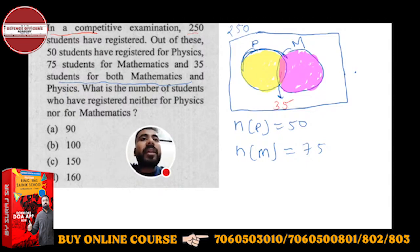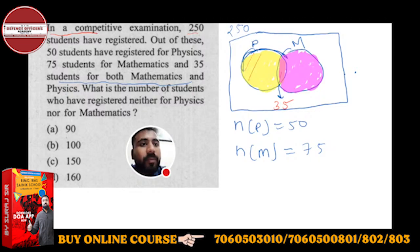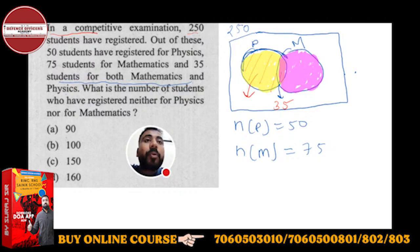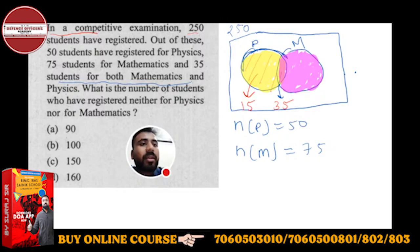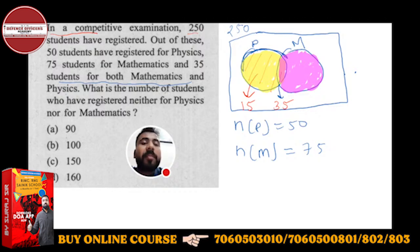Now it will be very easy to find Physics only. In Physics only, the total Physics is 50. If you do 50 minus 35, you will get 15 — specifically 15 in Physics only. And now, the whole M is given as 75. This whole pink but the common portion is 35, so I will do 75 minus 35 and get 40 for Maths only.